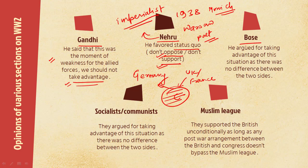Subhas Chandra Bose argued for taking advantage of this situation as there was no difference between the two sides. He said this is the moment of their weakness and we should wage a war against them. Because of that he left Congress and later joined the INA and waged a war on the British through that. The Socialists also had the same opinion — they argued for taking advantage of the situation as there was no difference between the two sides.